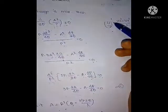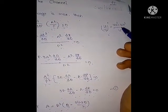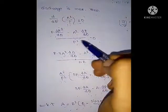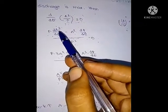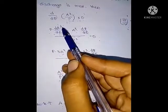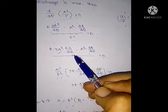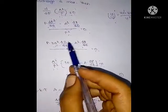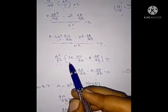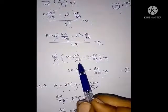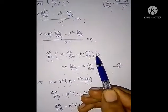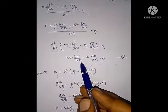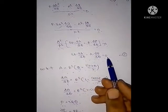Applying the quotient rule to A³/P: (d/dθ)(A³/P) = [P·(dA³/dθ) − A³·(dP/dθ)] / P² = 0. Here dA³/dθ = 3A²·(dA/dθ). Taking A² common in the numerator: A²/P² · [3P·(dA/dθ) − A·(dP/dθ)] = 0, so 3P·(dA/dθ) − A·(dP/dθ) = 0.